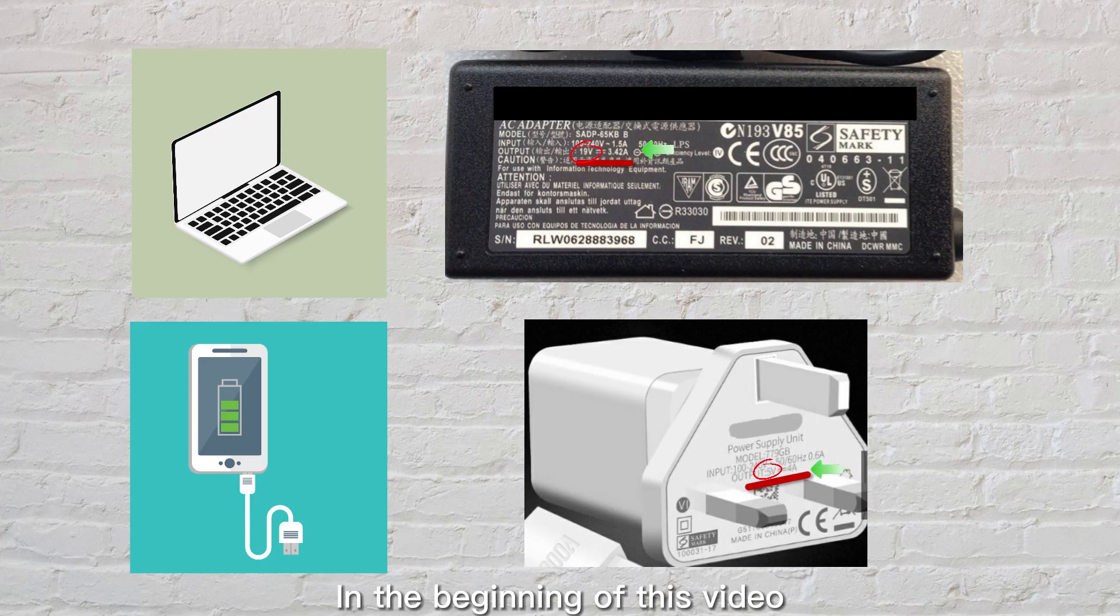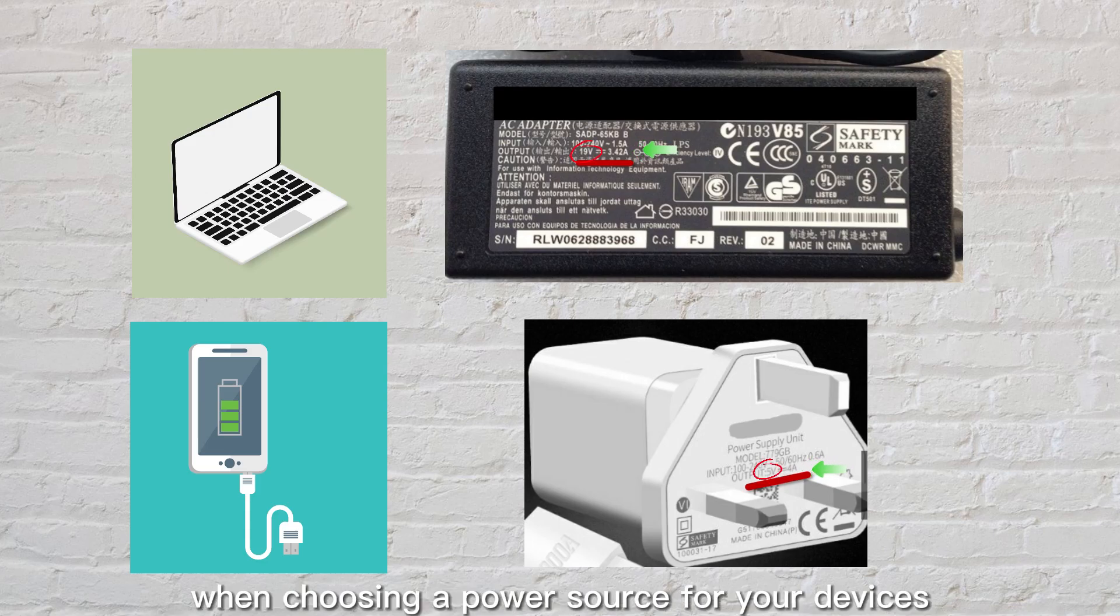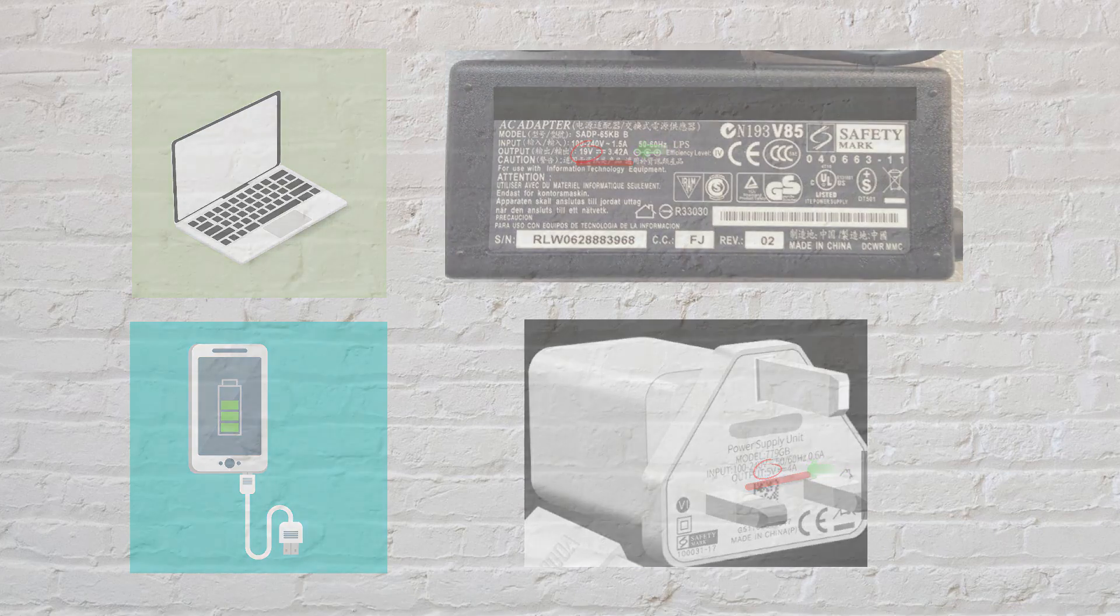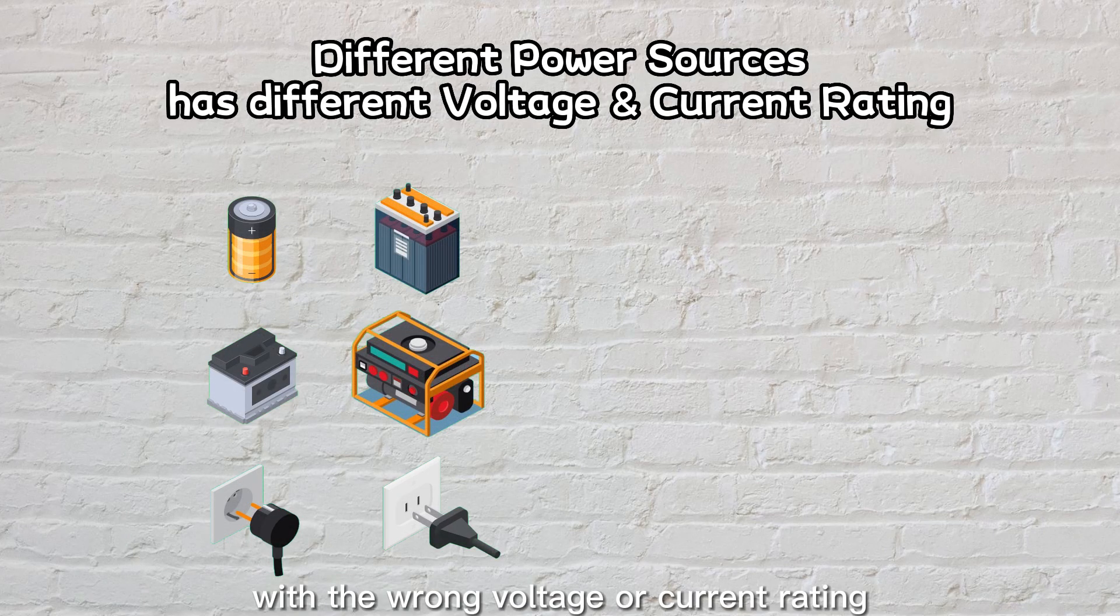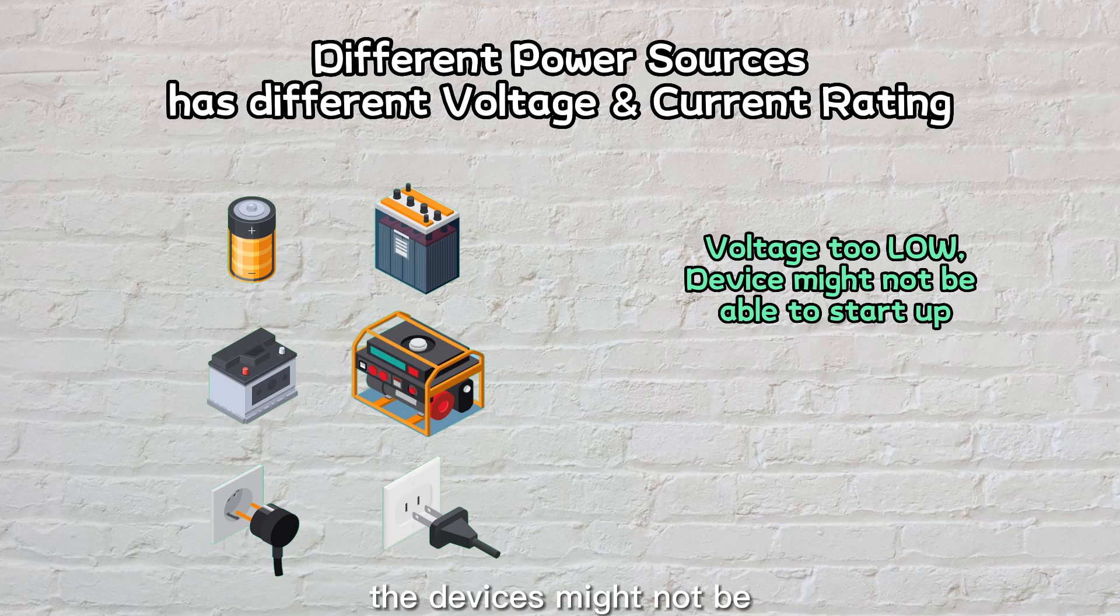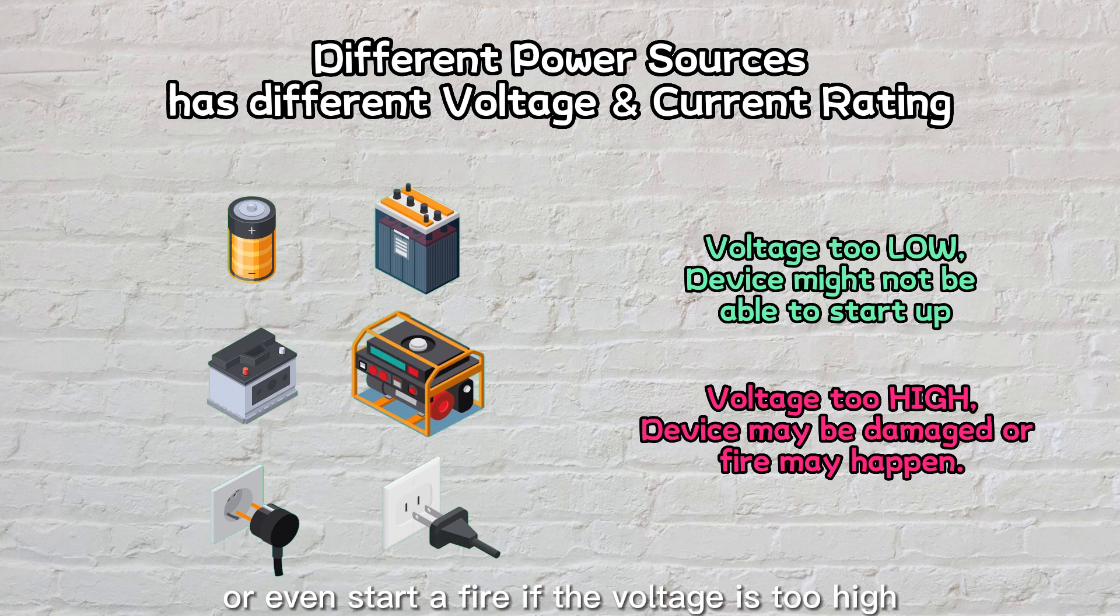In the beginning of this video, we learned that every electronics device has their own voltage and current rating listed on their labels. It's important to pay attention to these voltage and current ratings when choosing a power source for your devices. If you use a power source with the wrong voltage or current rating, the devices might not be able to start up if voltage is too low, or you could damage the device or even start a fire if the voltage is too high.